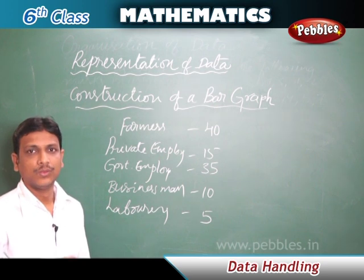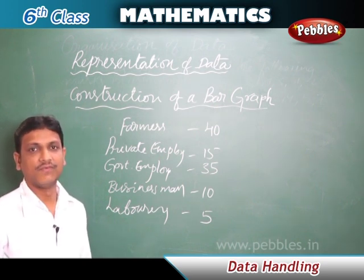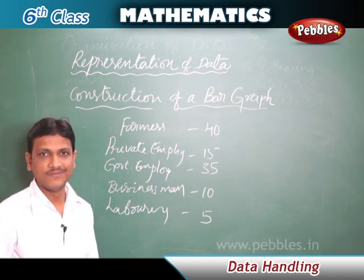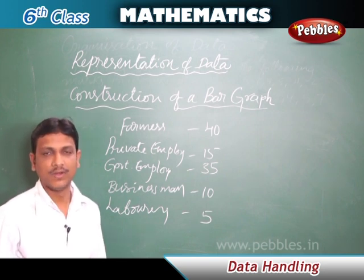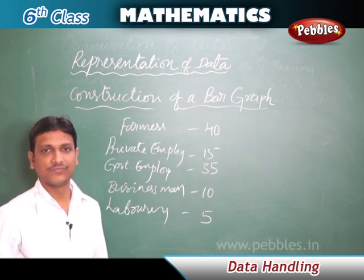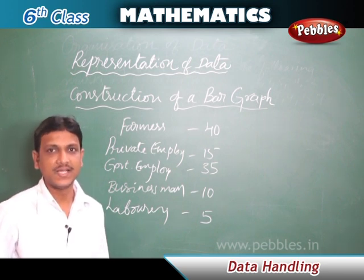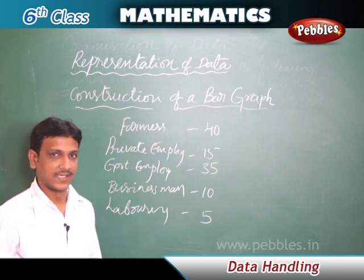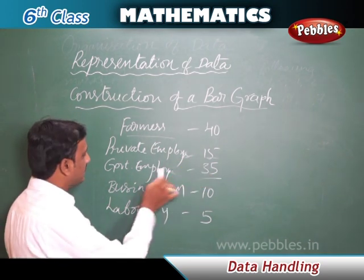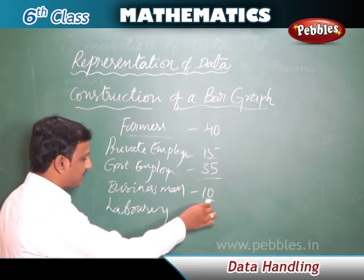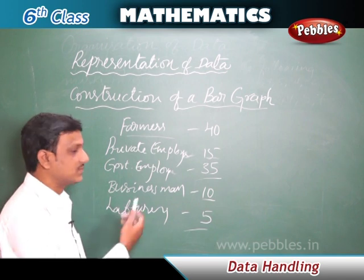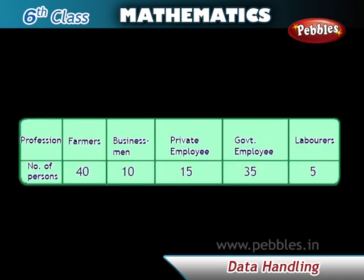Now we will learn the construction of a bar graph. We have data about people living in a colony: farmers – 40, private employees – 15, government employees – 35, businessmen – 10, and laborers – 5. We are going to represent this data using a vertical bar graph to get a clear picture of the information.